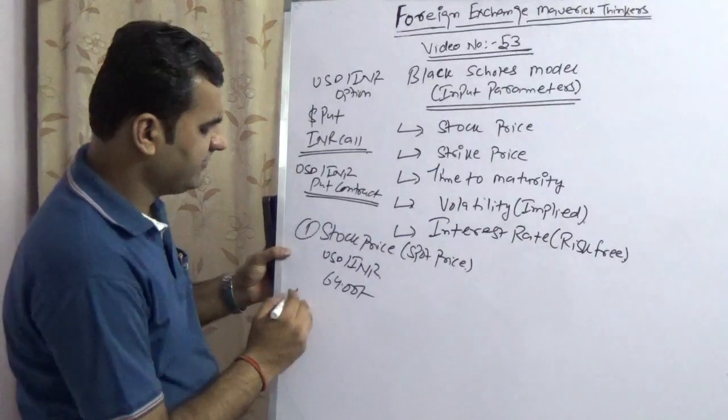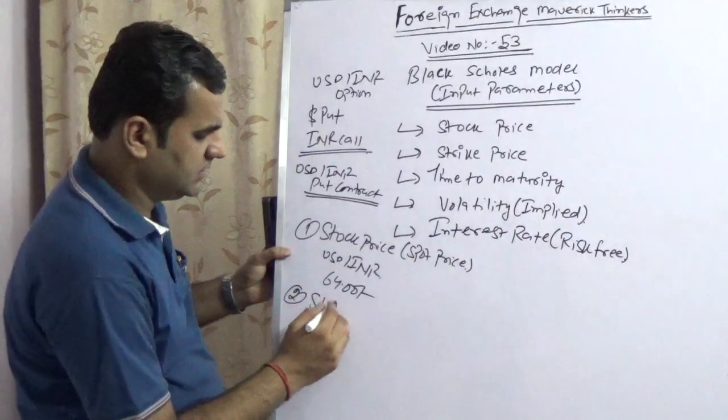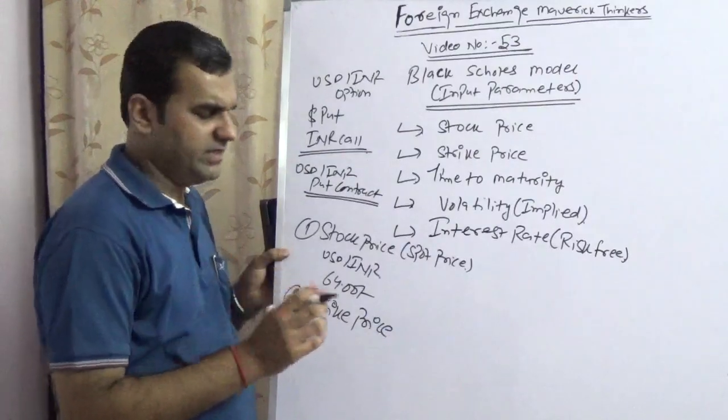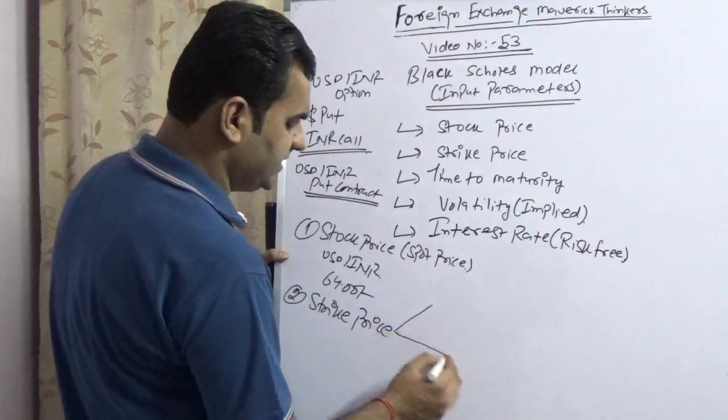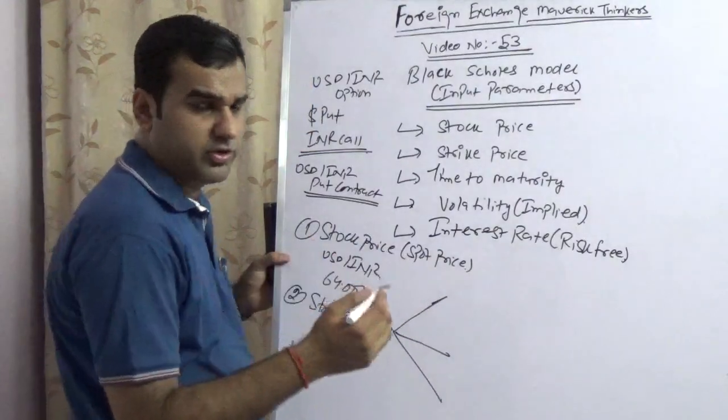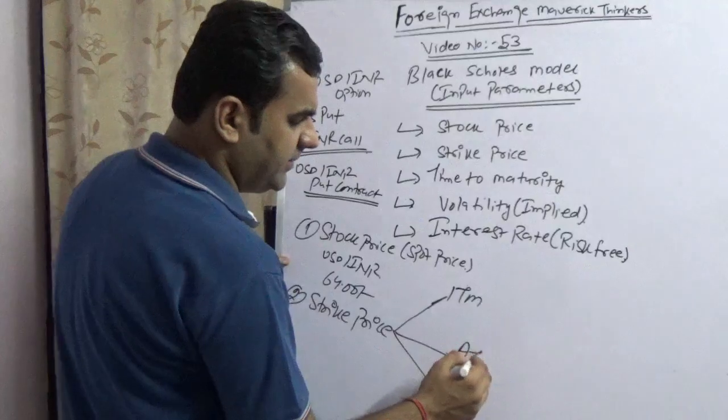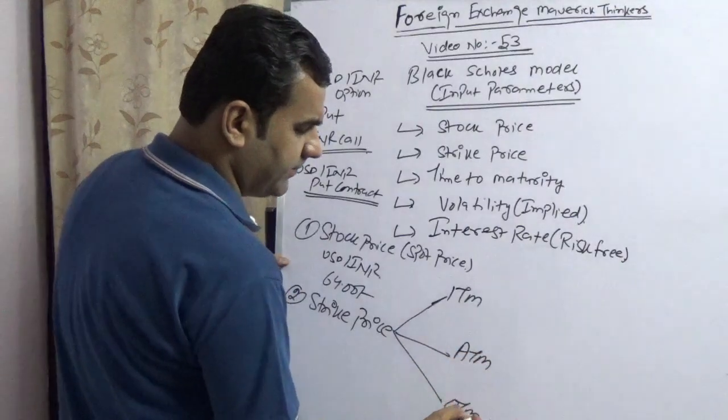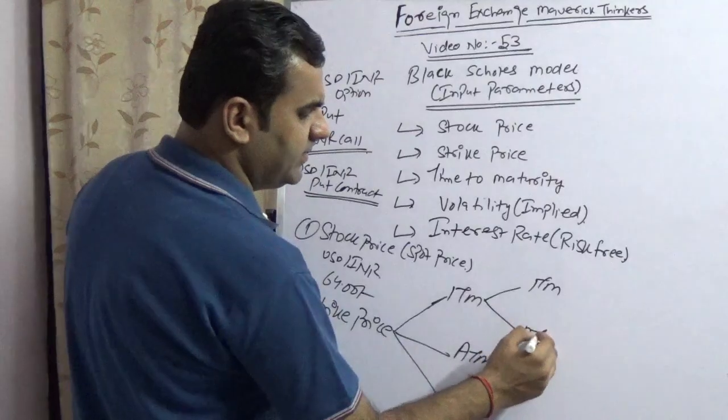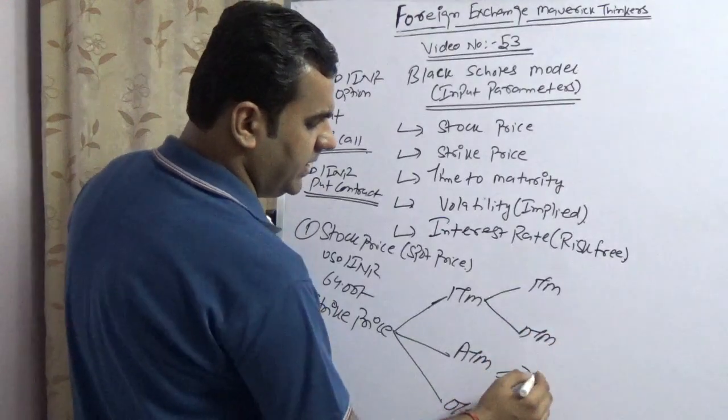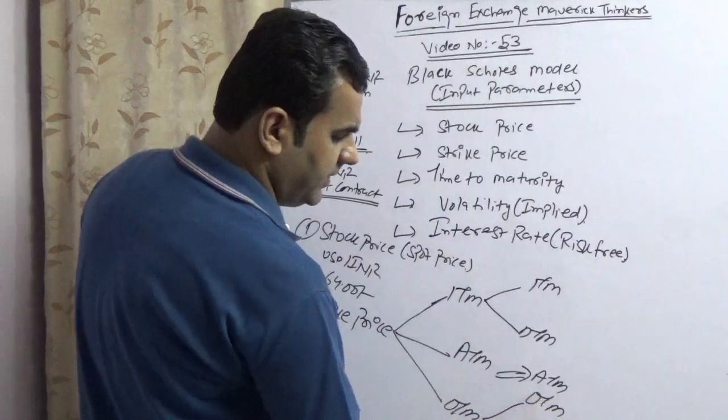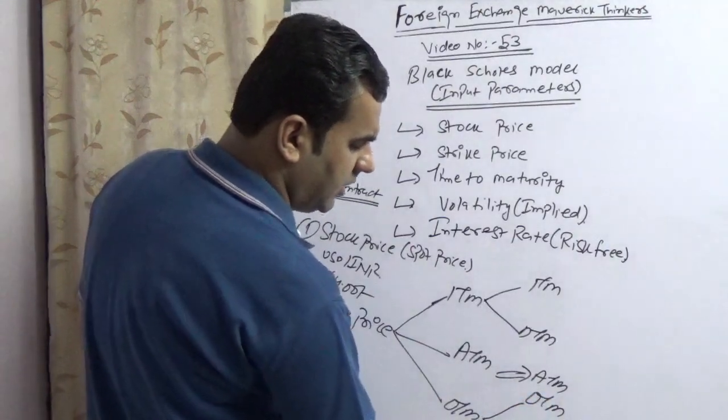The second important parameter is strike price, which can also be referred to as expiration price. Strike price is further categorized into three parts, which is known as the moneyness of an option contract: in the money, at the money, and out of the money. In the money can further divide into in the money and deep in the money. Out of the money would be out of the money and deep out of the money.